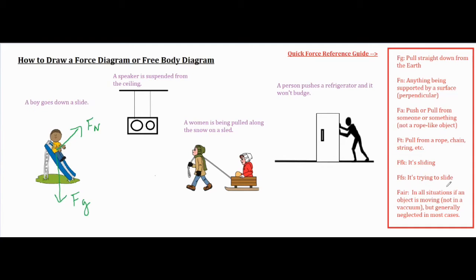Now is the boy sliding or trying to slide? In this case, he is moving down the slide. Now if he's going down the slide, the force of friction is going to oppose his motion. So we're going to make sure the arrow points exactly in the opposite direction of the way that he is moving.